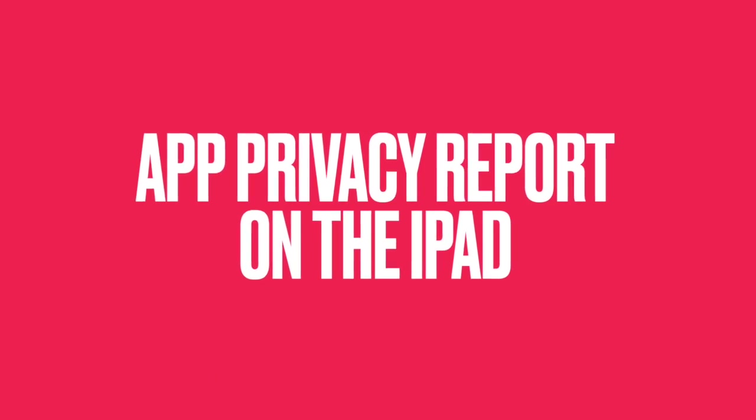Hello everyone. In this video we're going to take a look at the App Privacy Report on the iPad. With the App Privacy Report we can see how often an app is accessing our data such as our contacts, our calendars, or our photos. Not only that, we can also see which apps they're accessing. In addition, we can look at a website and see which apps have accessed that website and how often.